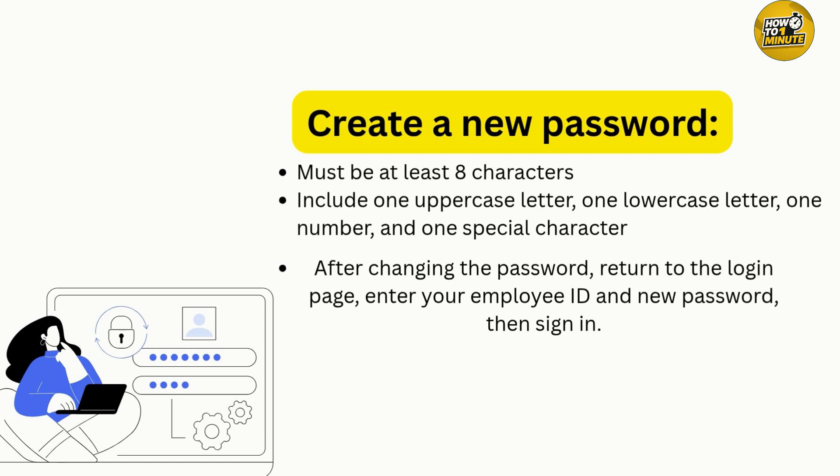If you saved the password using Google, it may auto-suggest it for you. If it's still not working, try using desktop site mode again or re-entering your credentials carefully. If you can't get it to work, record your screen and send the video to your HR or Drawing Box support team.